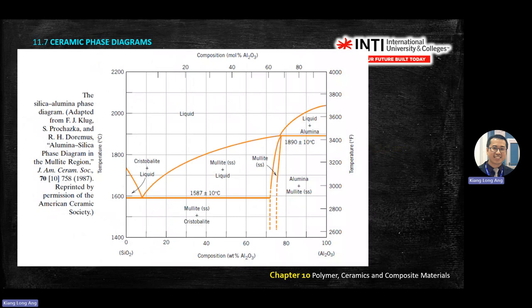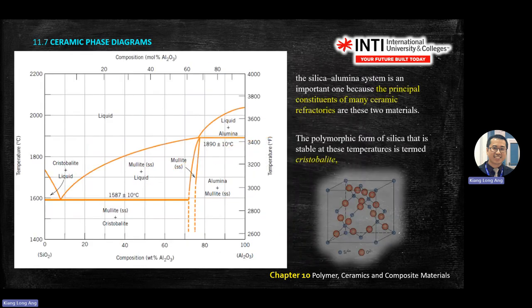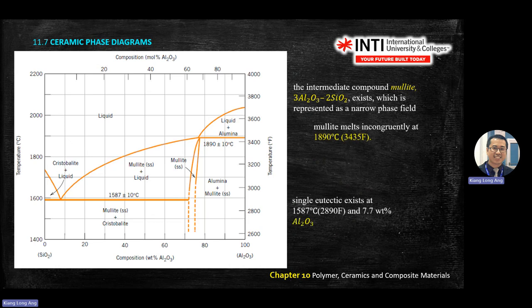The last ceramic phase diagram is for SiO₂-Al₂O₃. It tests your understanding of phase diagrams: two components, SiO₂ and Al₂O₃, with a liquid region. There is a compound called mullite. The exam will not test how the phase forms but will test you on reading the diagram — the phase percentages, identifying the process as eutectic, eutectoid, or pro-eutectoid.